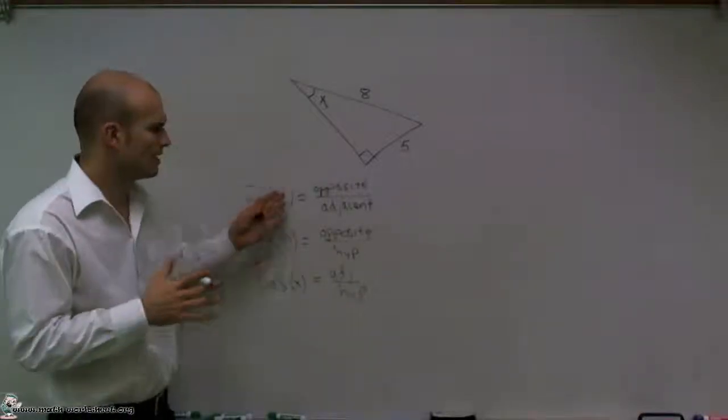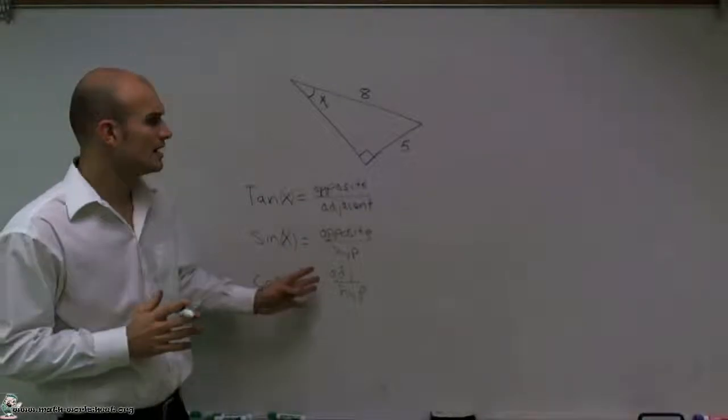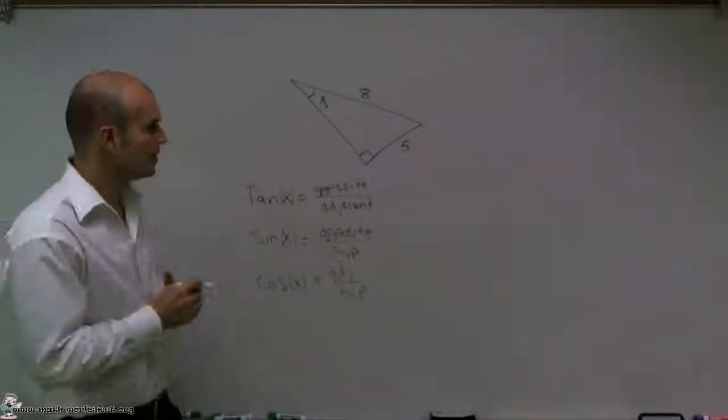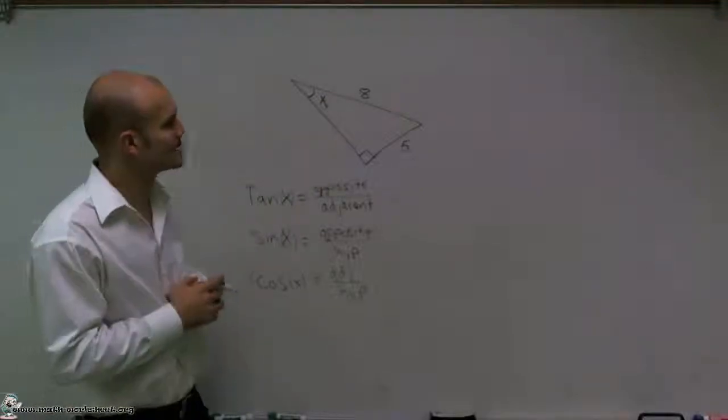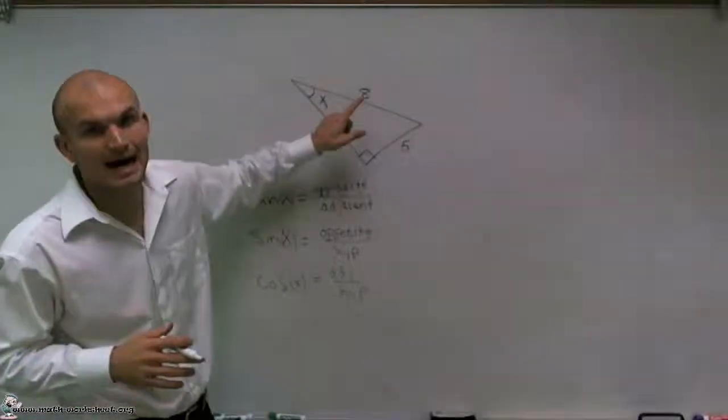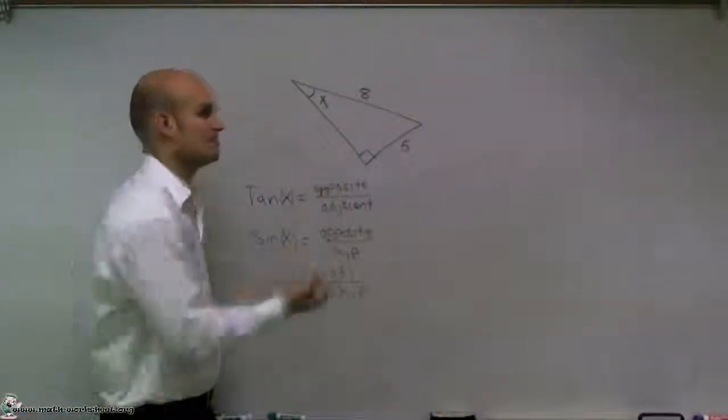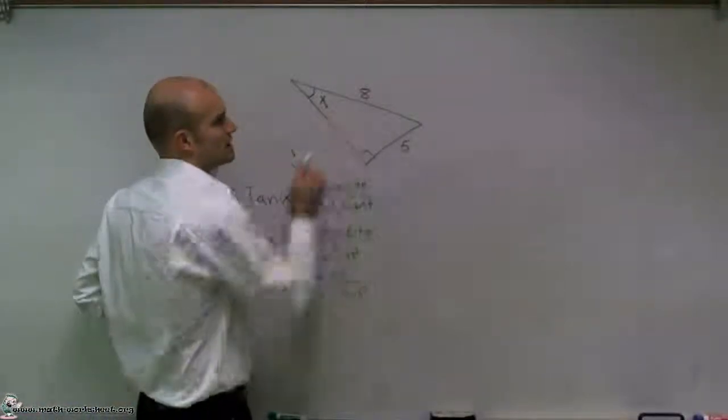Now, you might ask me, I kind of remember hypotenuse from doing the Pythagorean theorem, but where did your adjacent or your opposite come from? Well, if I'm going to look at my angle x right here, we know that the hypotenuse is always going to be the longest length. Another way to remember that is your hypotenuse is always directly across from your 90-degree angle.